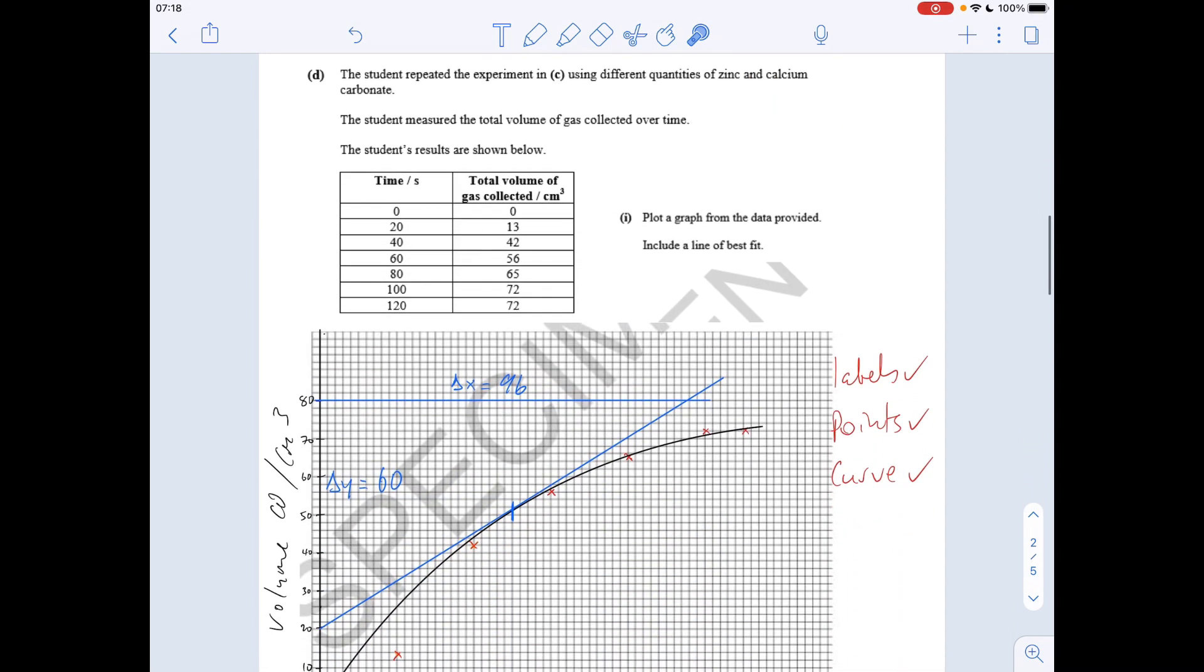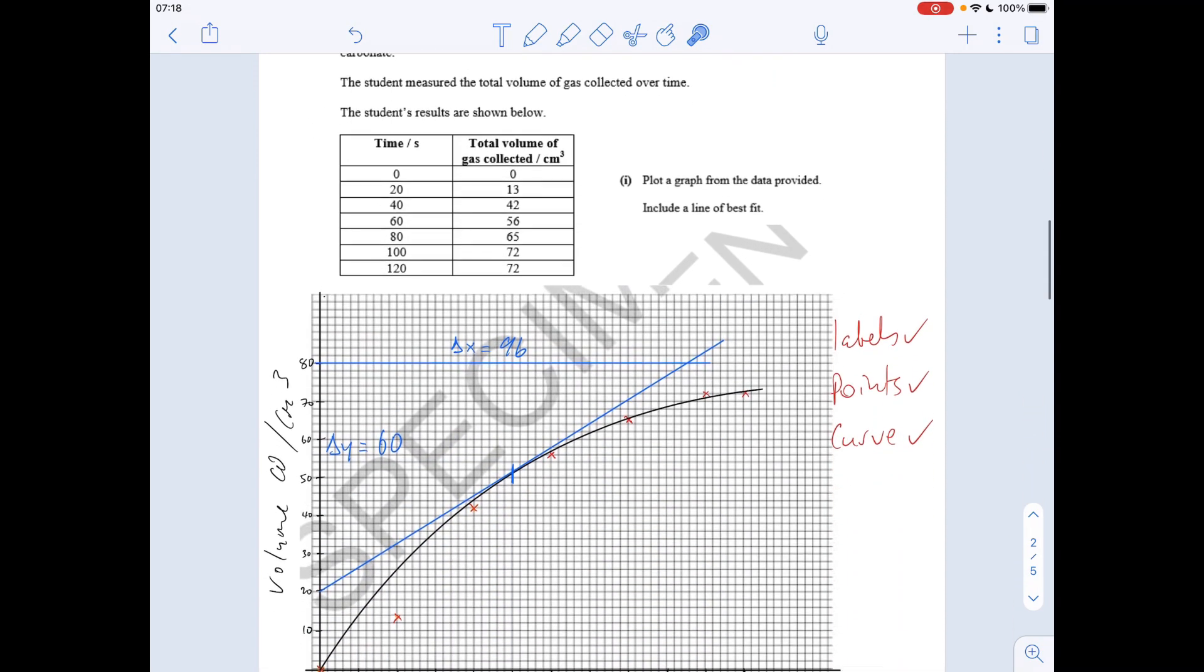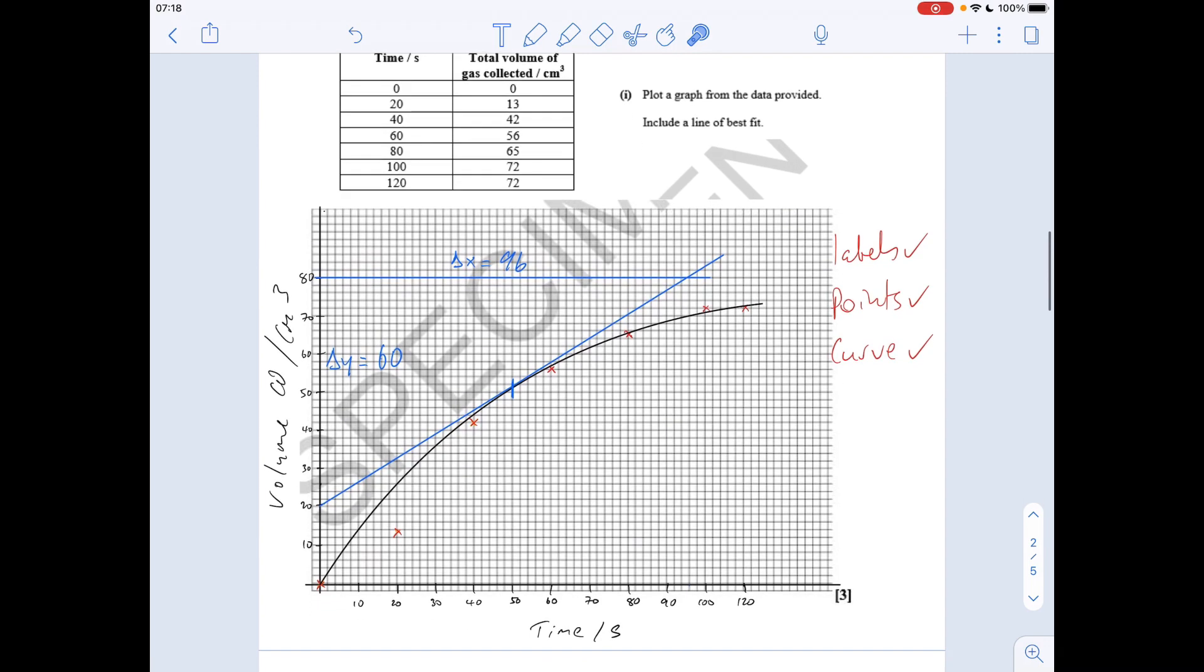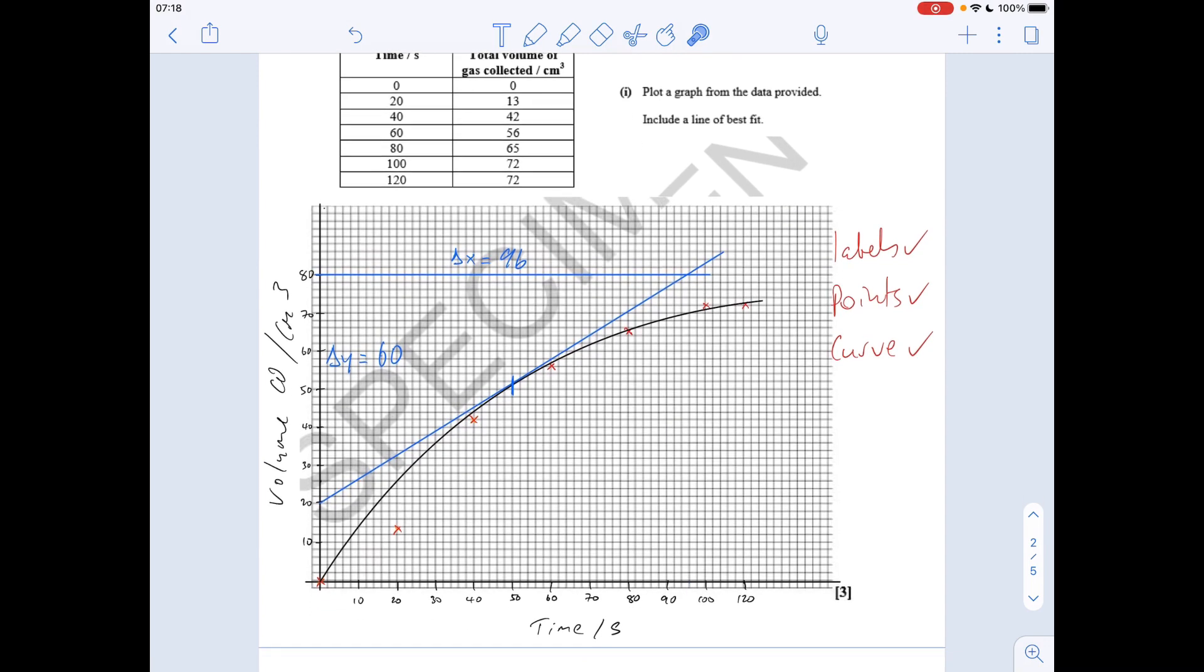Next, we've got to draw this graph from this data. The examiner is going to be looking for the axes being labeled correctly—don't forget your units—the points plotted correctly, and the curve, the best fit curve through those points. You can see there's an obvious outlier there, so you'd need to miss that one out. Something like that would be fine.